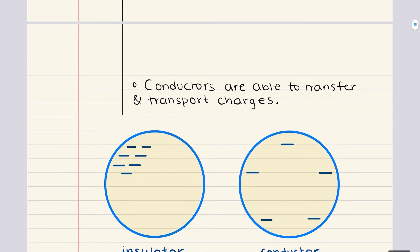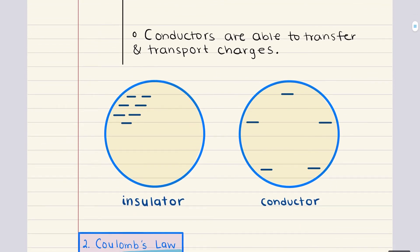On the other hand, conductors behave very differently. In a conductor, electric charges are free to move throughout the material. This means that if you place a charge on a conductor, it will spread out across the entire surface of the material. Conductors such as metals, like copper or aluminum, they allow charge to flow freely, and they can easily transfer this charge to other objects. This is why materials like metal wires are used to conduct electricity. They allow charges to move and be transported over long distances efficiently.